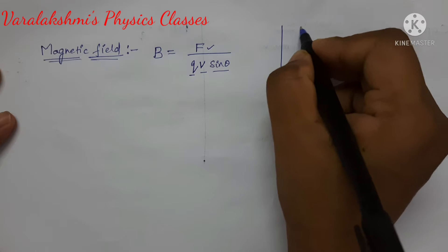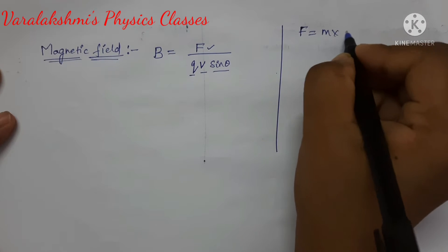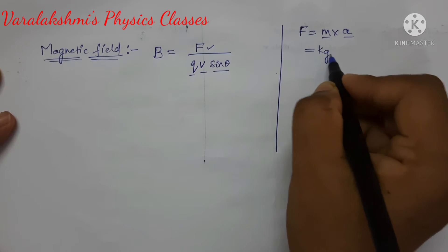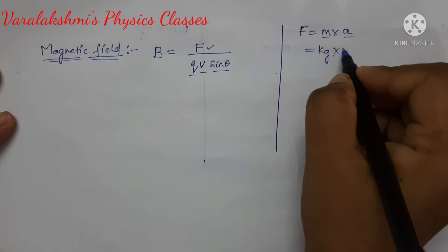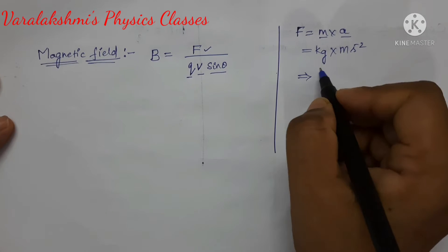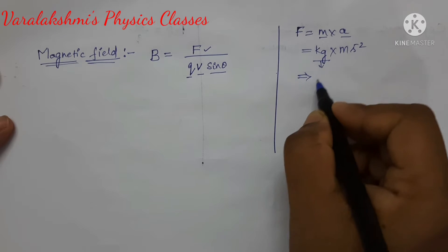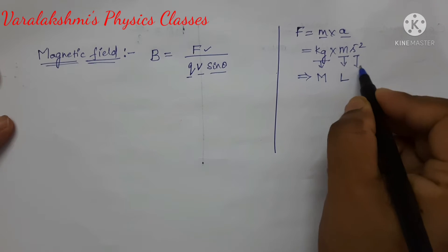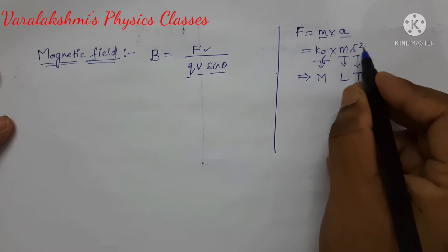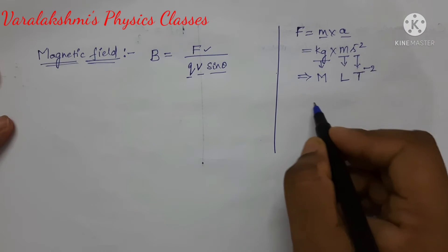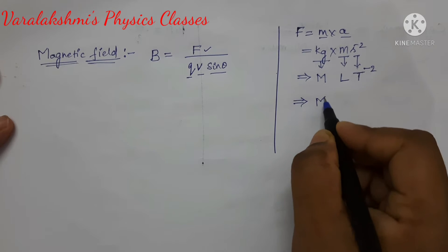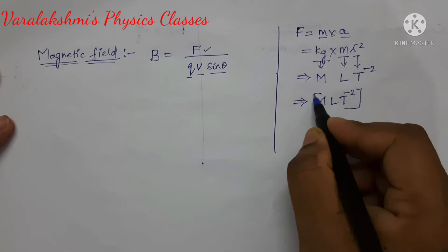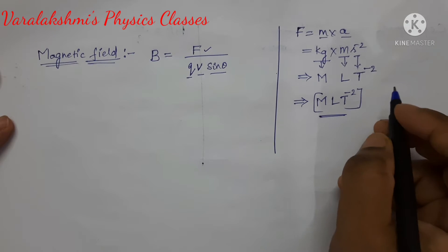Let us find the dimensional formula for force. Force equals mass into acceleration. The SI unit of mass is kilogram and for acceleration it is meter per second squared. Now writing the dimensional formula: kg is expressed as capital M, meter as L, and second as capital T. Since there is a power of 2, it becomes T to the power minus 2. So the dimensional formula for force is [M L T⁻²].